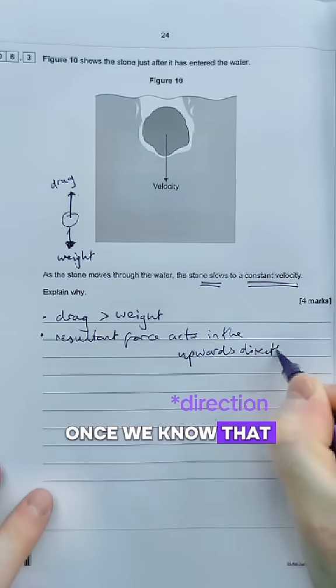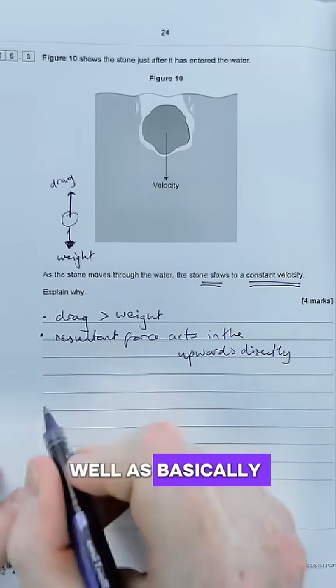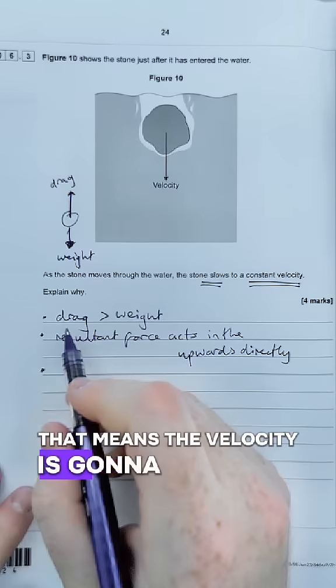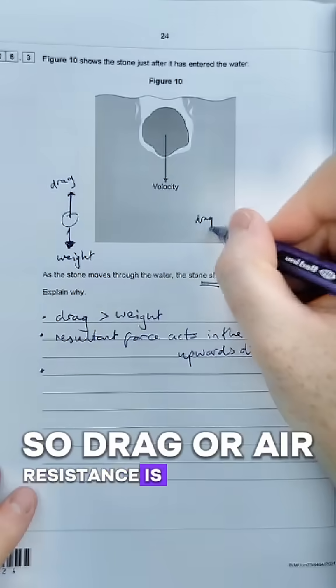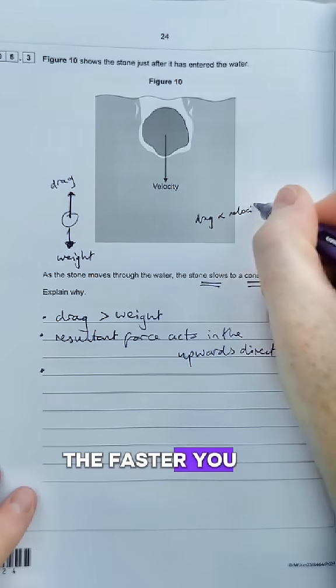Once we know that, then we can figure out that basically means the velocity is going to decrease as this happens. Drag or air resistance is proportional to velocity. The faster you go, the higher the drag.